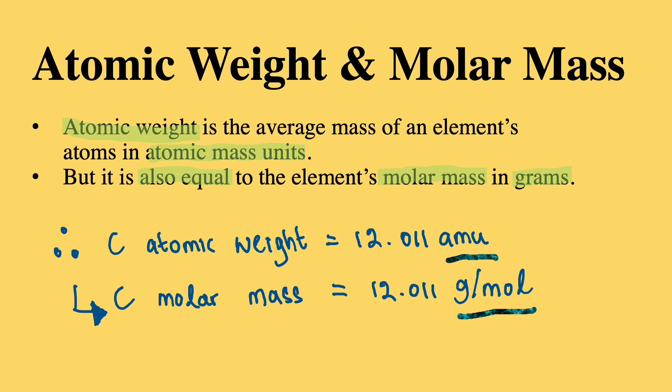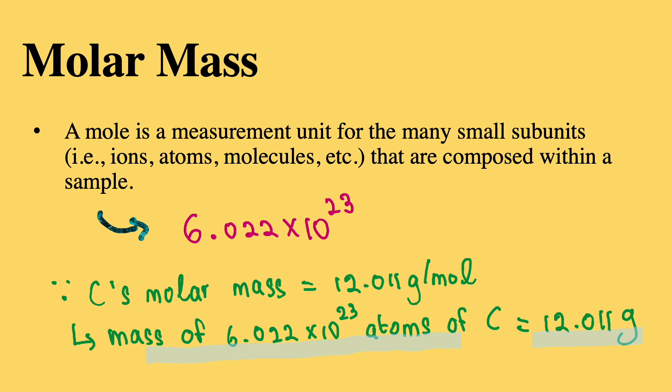Therefore, while carbon's atomic weight is 12.011 atomic mass units, its molar mass is also 12.011 grams per mole. This brings us to the next concept, molar mass.